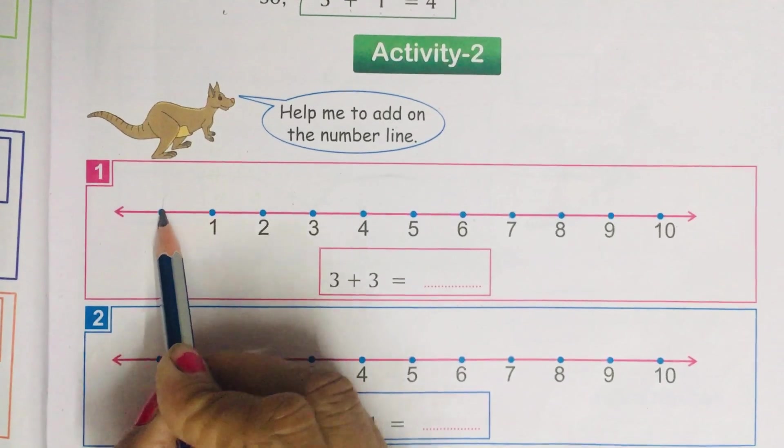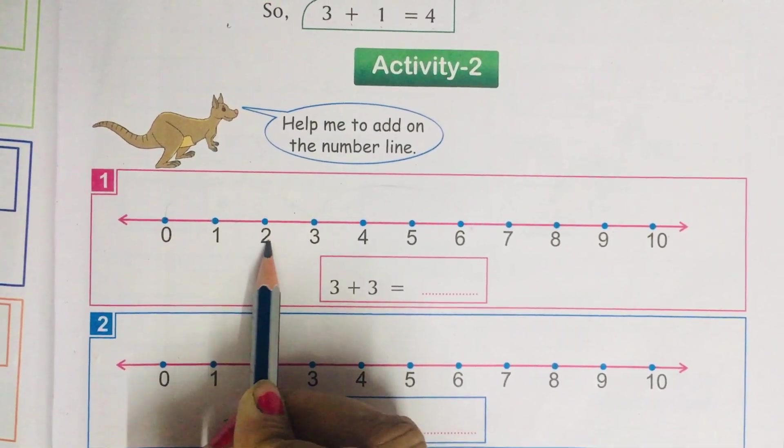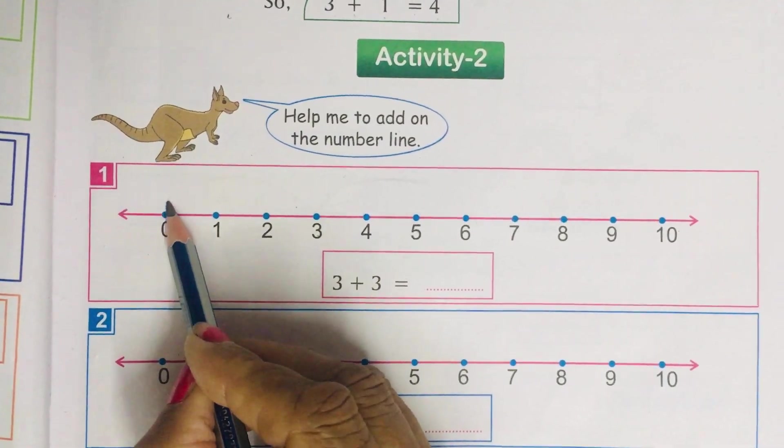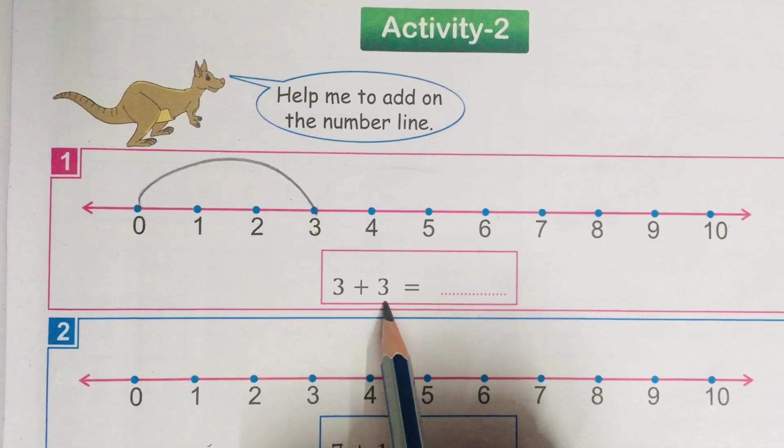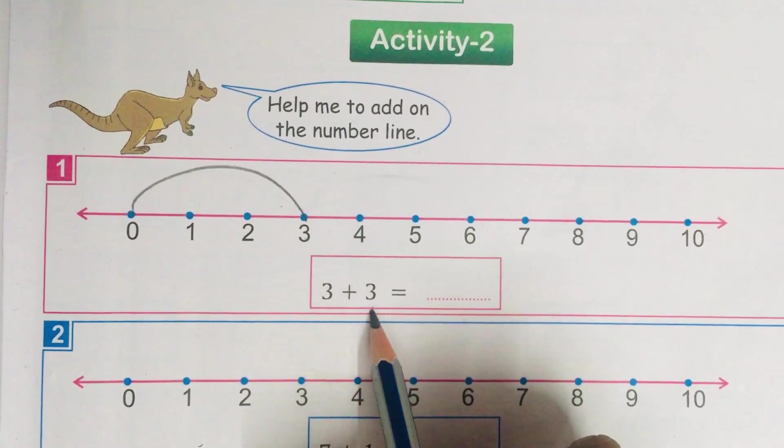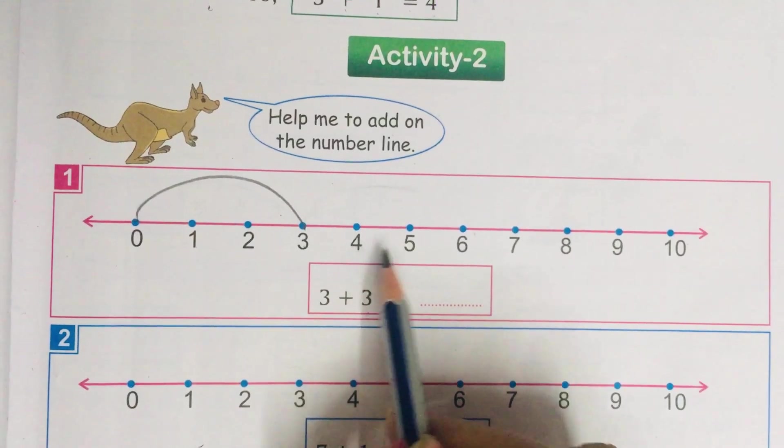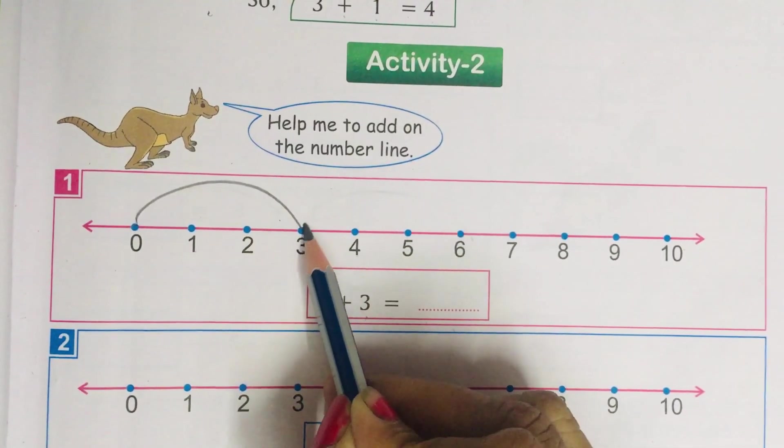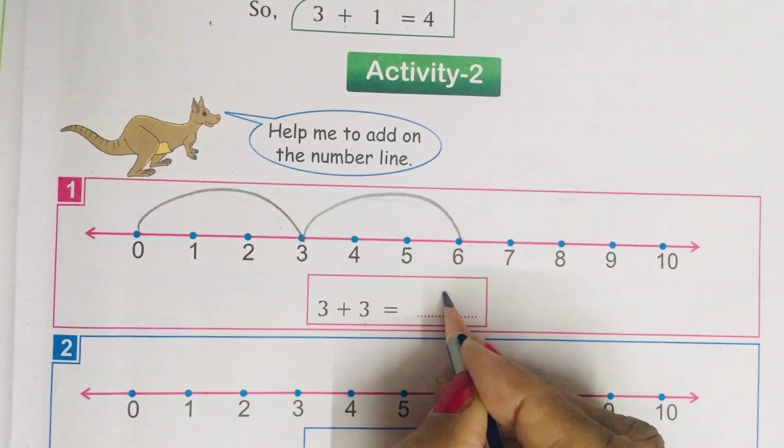Put your pencil on 0. Count till 3. This is 1, 2, 3. So, we will draw a line like this till 3. Then, again 3 is written over here. So, what we will do? We will count again till 3: 1, 2, 3. So, we will jump till 6. So, our answer will come 6.